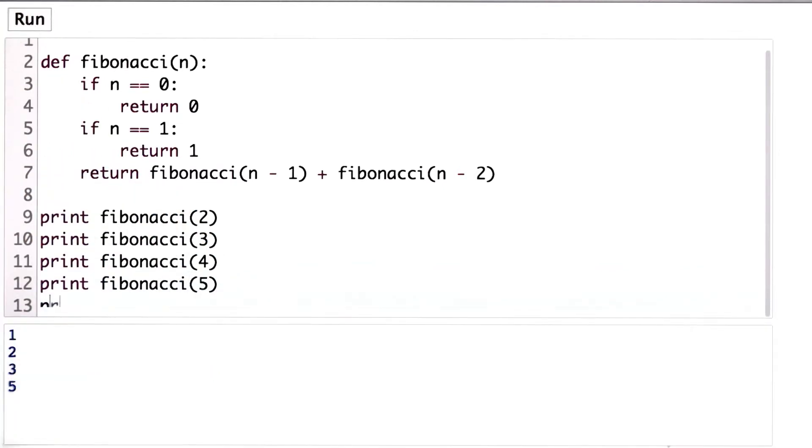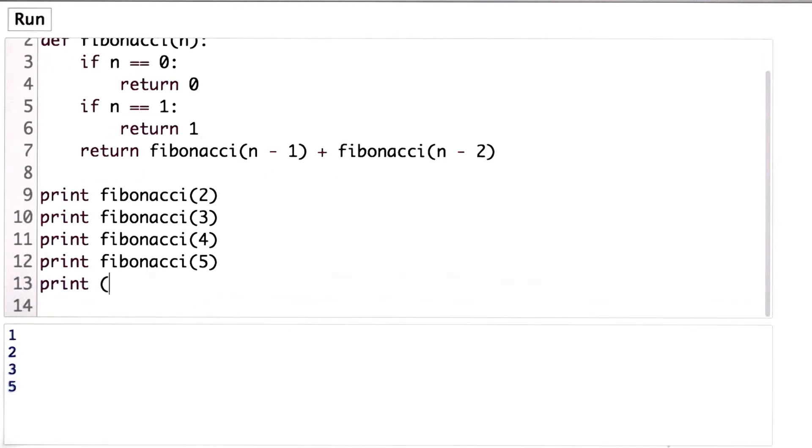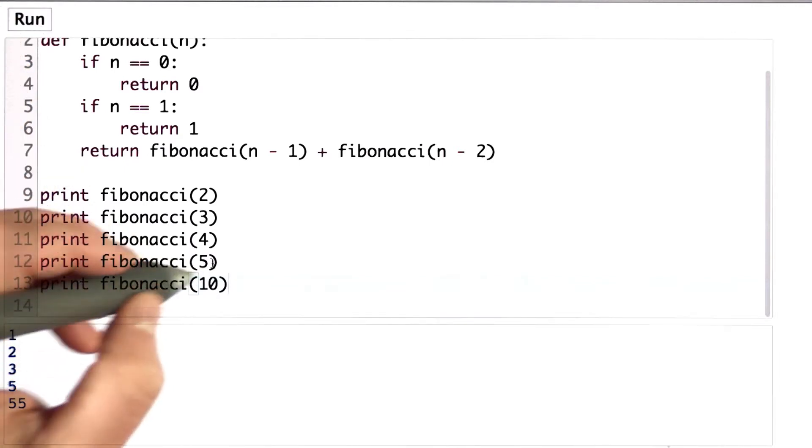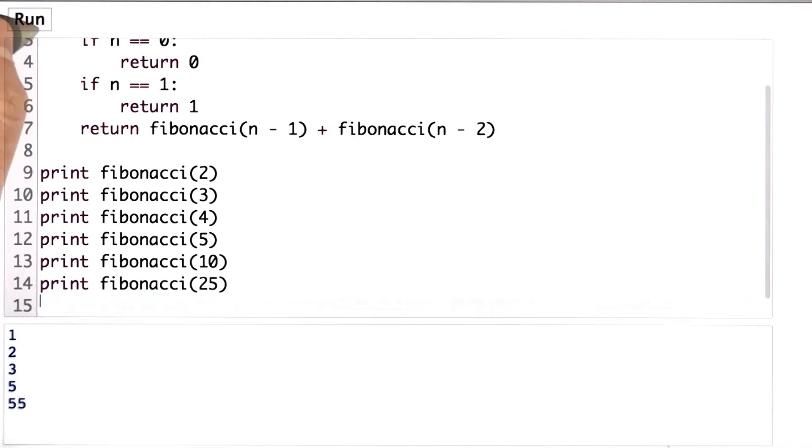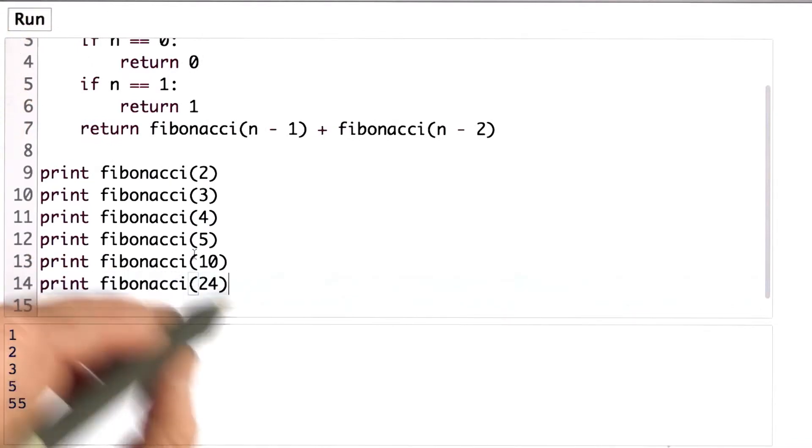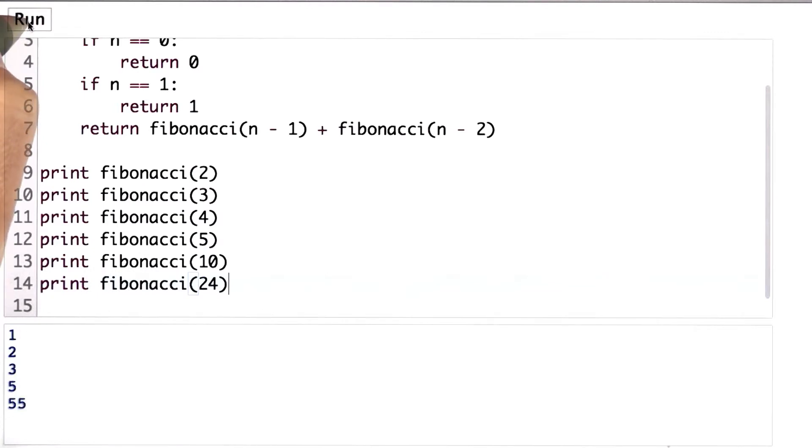And let's try something a little bigger. Let's try Fibonacci 10. We get 55. We'll try Fibonacci 25. We'll try Fibonacci 24. So if we're counting months, that would be the number of rabbits in 2 years. And we get 46,000.